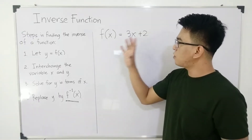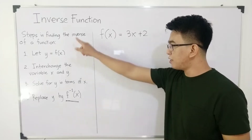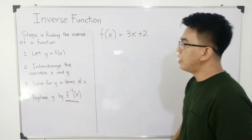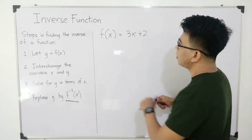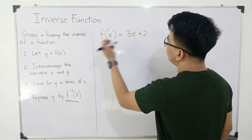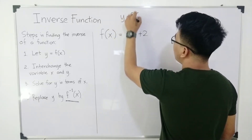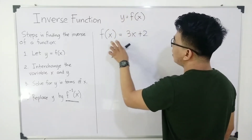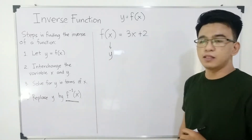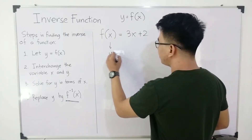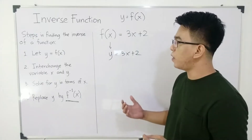Now let's try to find the inverse of this given function by following these four steps. Number one, let y be equal to f of x. As you can see, we have here f of x. And we know that when it comes to function, y is equal to f of x. So we can replace f of x by y. So it will become y equals 3x plus 2. We are done with step number one.